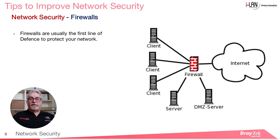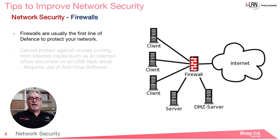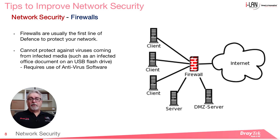Firewalls are usually the first line of defence to protect your network. They establish a barrier between secured and controlled internal networks that can be trusted and untrusted outside networks such as the internet. It's important to remember that firewalls cannot protect against viruses coming from infected media, such as an infected office document brought in on a USB flash drive, which requires anti-virus software installed on PCs to minimise that risk.